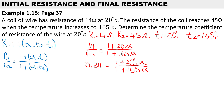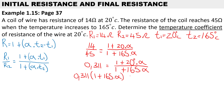The denominator on the right-hand side — 1 plus 165 times the temperature coefficient — is currently dividing. If we take it across to the other side, it becomes a multiplier. So we have 0.311 multiplied by 1 plus 165 degrees times the temperature coefficient, and on the other side we have 1 plus 20 times the temperature coefficient.